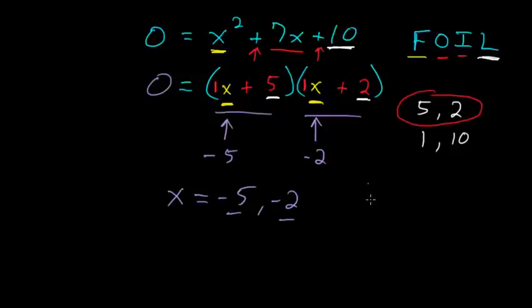And to write this answer as a solution set, we just put it in brackets like this, negative 5 comma negative 2. On the actual CLEP test, you'll have multiple choices for your answers. But in these videos, I'll just give you the answer.